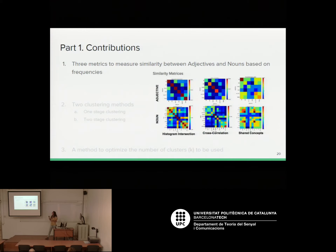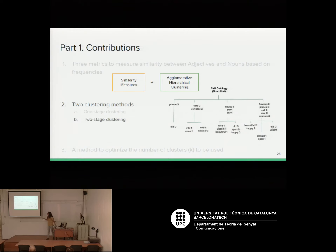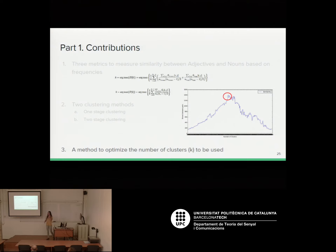We created three metrics to measure similarities between pairs of adjectives and pairs of nouns using the frequencies. Using these metrics we propose two clustering methods. The first is a one-stage clustering, which did not give very good results. The two-stage clustering method uses agglomerative hierarchical clustering with our similarity metrics as distance metrics. These clustering methods require setting a total number of clusters, and we created a method to optimize the number of clusters by maximizing a similarity metric.